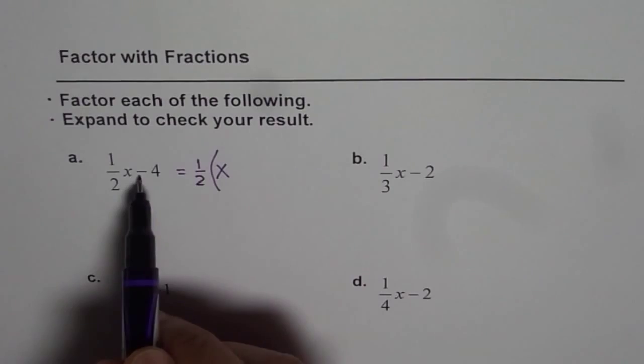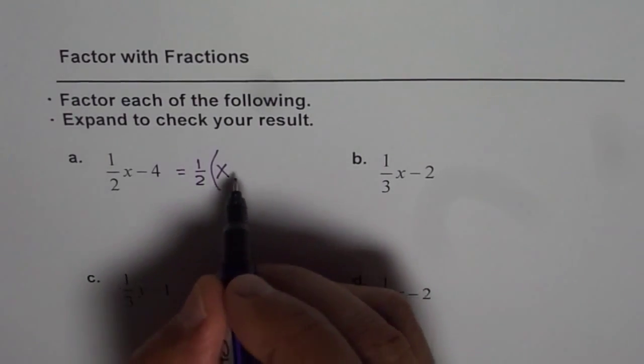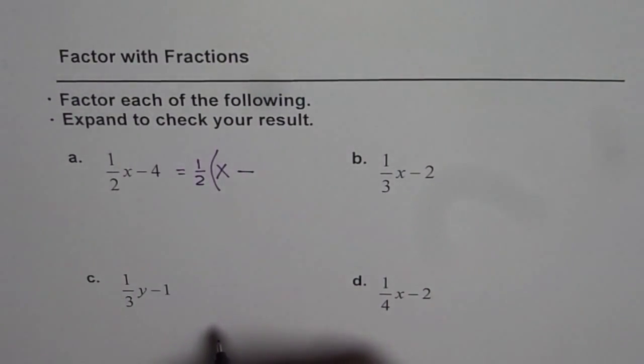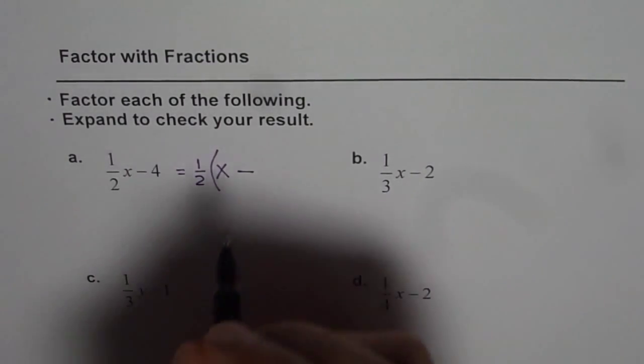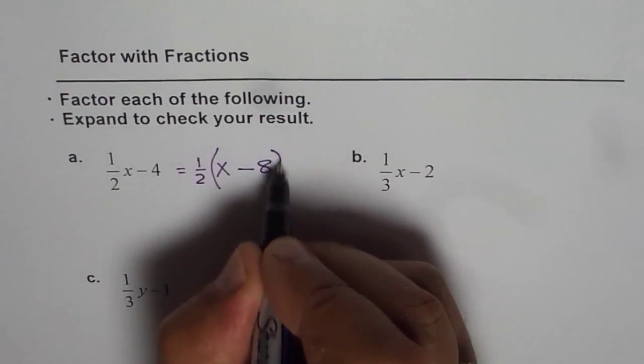Now minus 4, when I factor 1/2, what should I get? It should be minus 4 times 2, which is minus 8. So it is x minus 8.